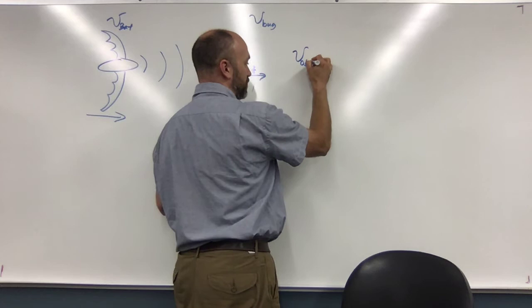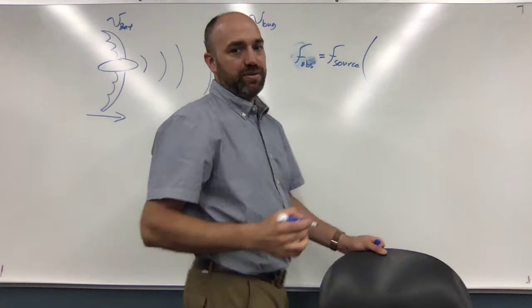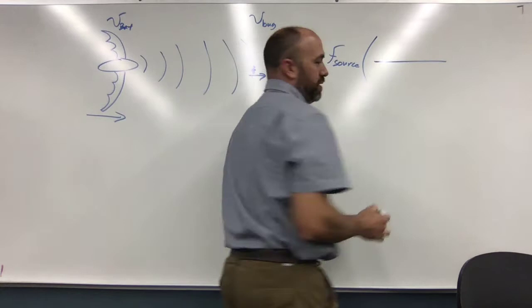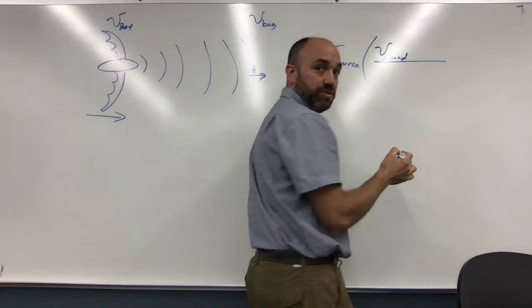So we'll use the observer equation. Frequency of the observer equals frequency of the source times—y'all have to help me here. I think the speed of sound is first, is that right? Yeah, speed of sound. And then is it plus or minus upstairs?